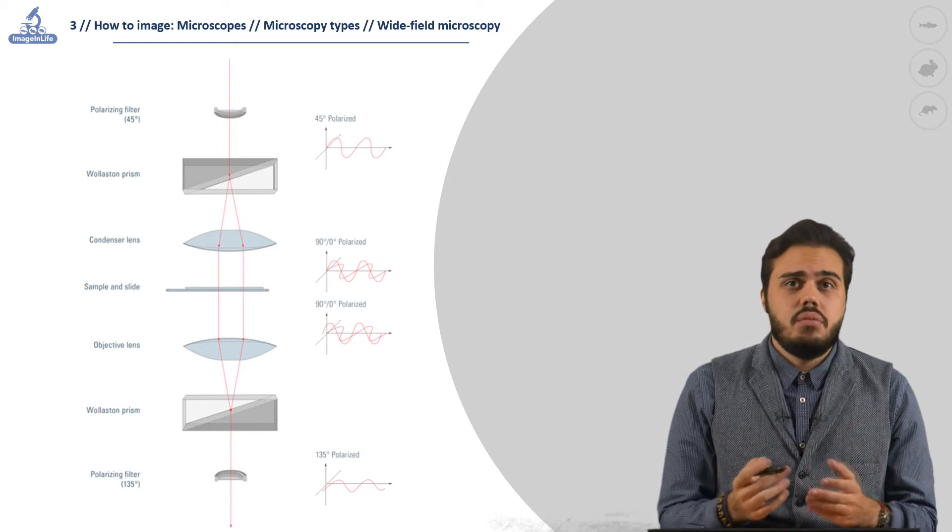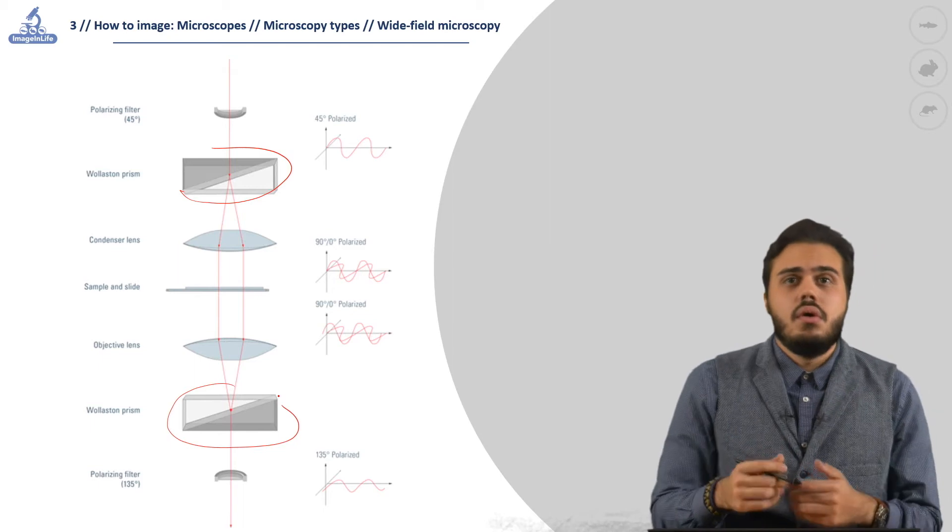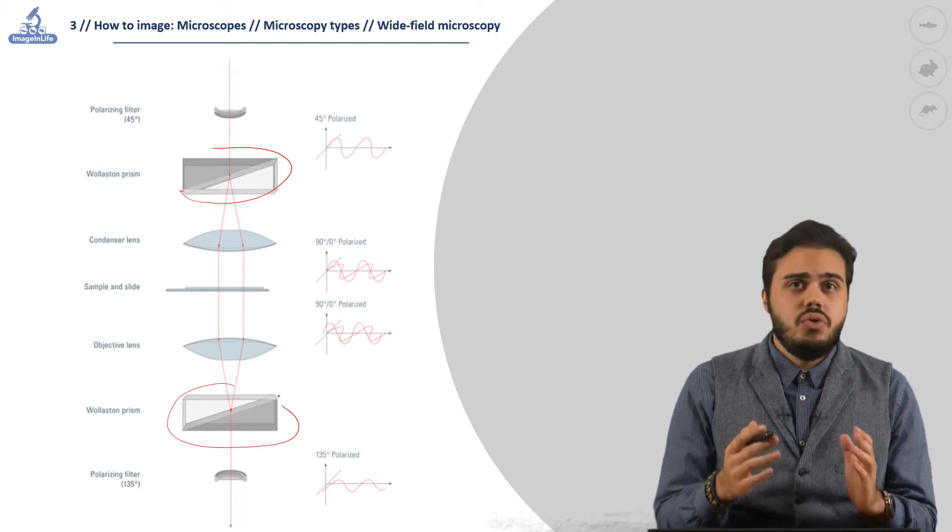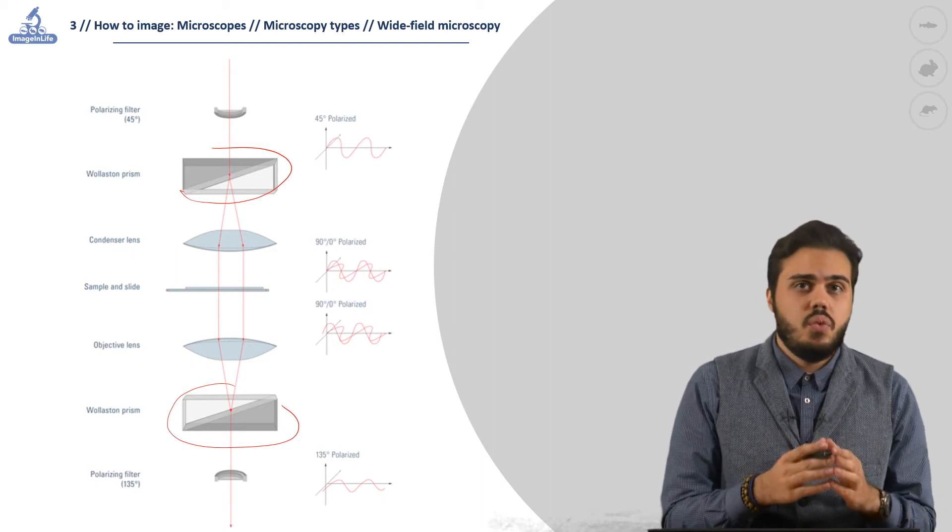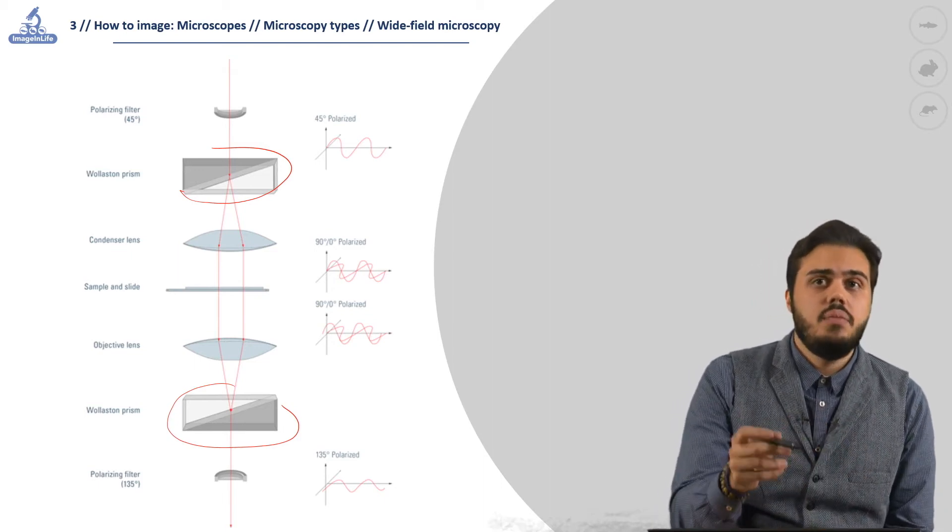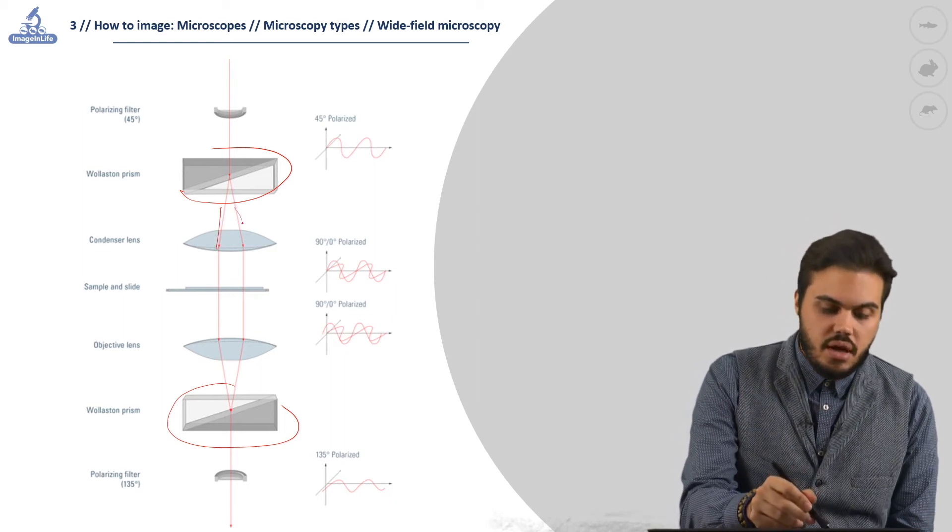The DIC method makes use of Wollaston prisms, made of two different materials with different refractive indices. This prism splits a light wave and elliptically polarizes the resulting light waves at 0 and 90 degrees.